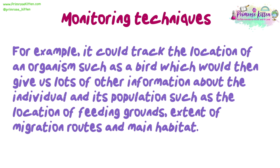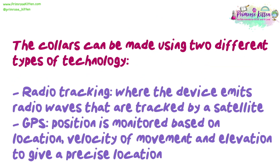For example, a collar could track the location of an organism, such as a bird, which would then give us lots of other information about the individual and its population, such as the location of feeding grounds, extent of migration routes, and the main habitat. The collars can be made using two different types of technology: radio tracking, where the device emits radio waves that are tracked by a satellite; or GPS, where the position is monitored based on location, velocity of movement, and elevation to give precise location.